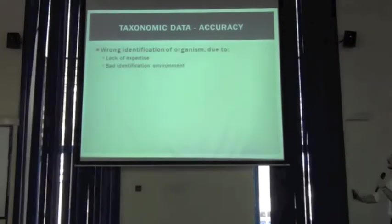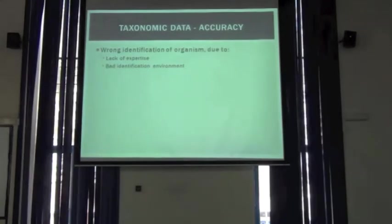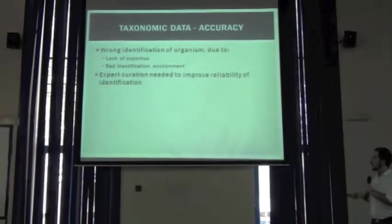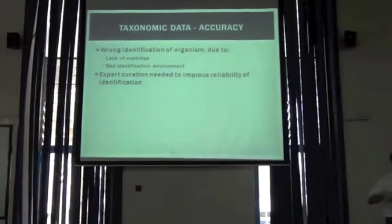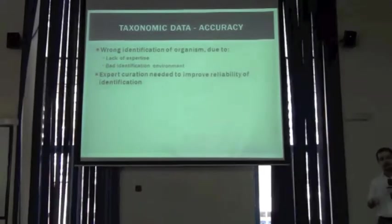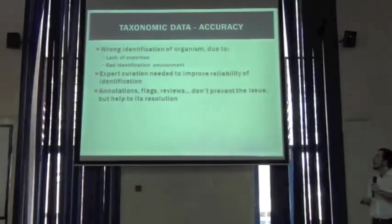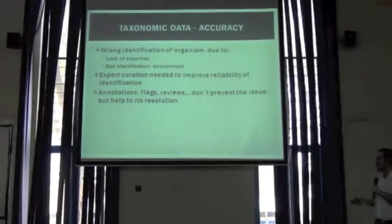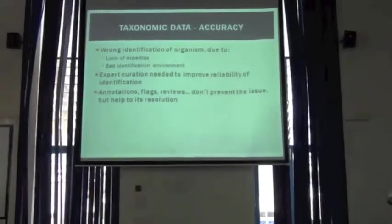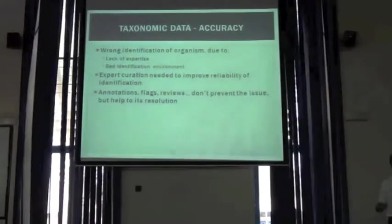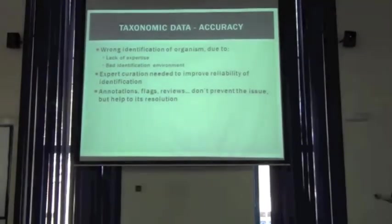We are going to focus now on the wrong identification of organisms, which can be due to a lack of expertise or to a poor identification environment. In order to have reliable taxonomic identification, we must have expert curation at some point. We need an expert to review our identification list and validate it. If we have inaccurate taxonomic identifications, we can use tools such as annotations or error flagging, making previous reviews, to not prevent these issues but greatly help in improving the reliability of identification.